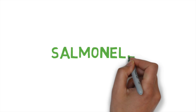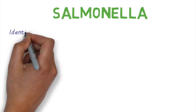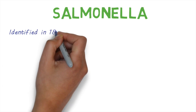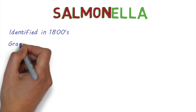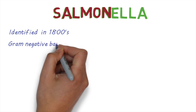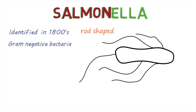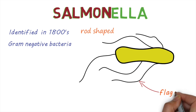Salmonella is a group of bacteria that can infect animals and humans. The bacteria was first identified in the 1800s and named after an American scientist called Salmon. Salmonella belongs to a group of bacteria called Gram-negative bacteria. They're shaped like rods and can have flagella to help them move around.